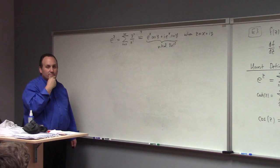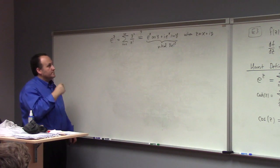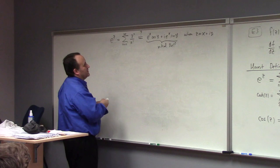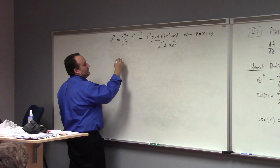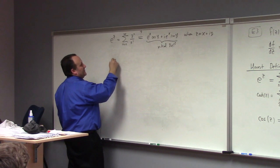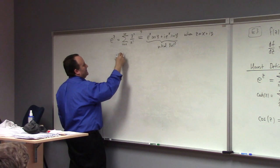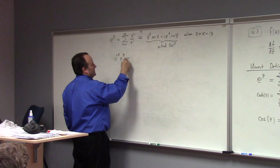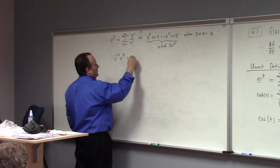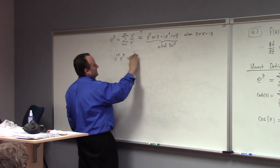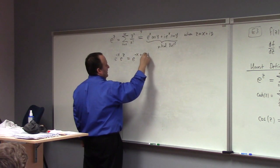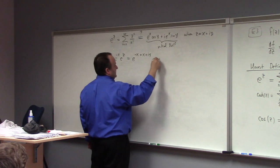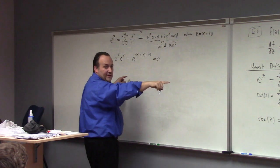Any ideas? Divide out e to the x. I like that. That's actually really good. So how about this? e to the minus x times e to the x times e to the i y — because this is minus x plus x plus i y — so that's just equal to... now here I am using the theorem that's proved in the book, the adding angles formula, the law of exponents.